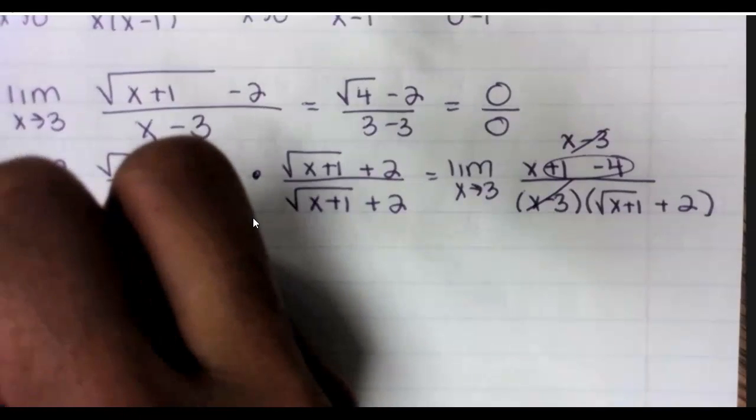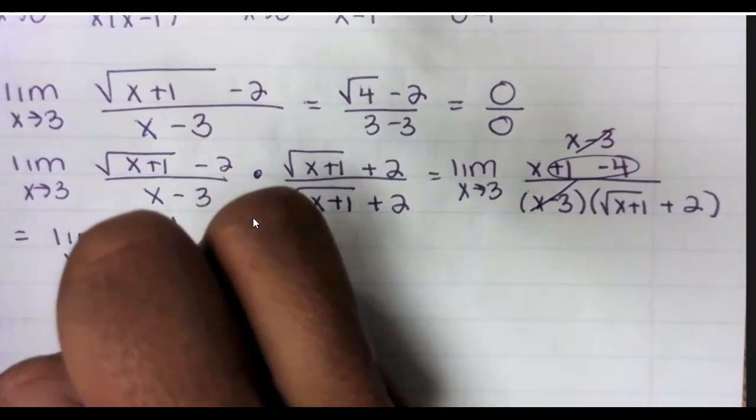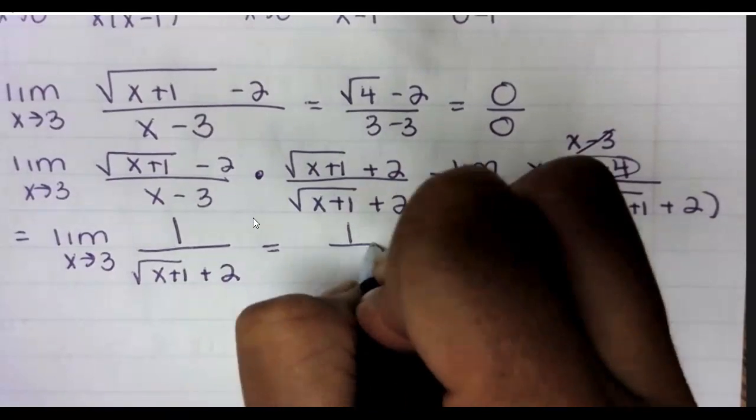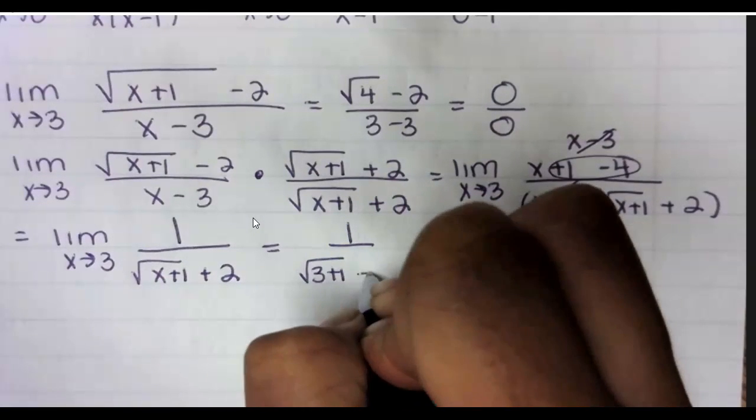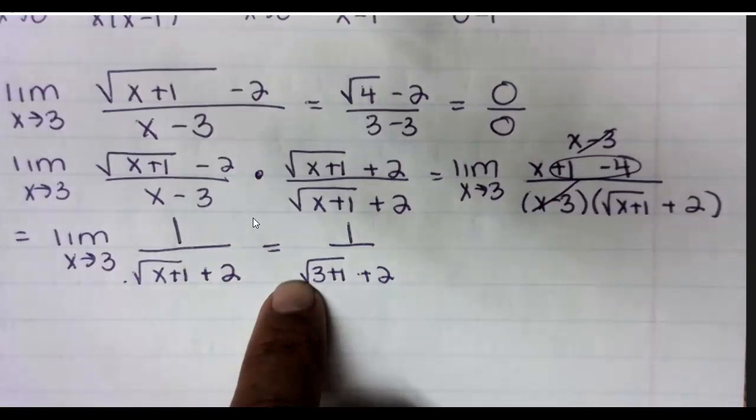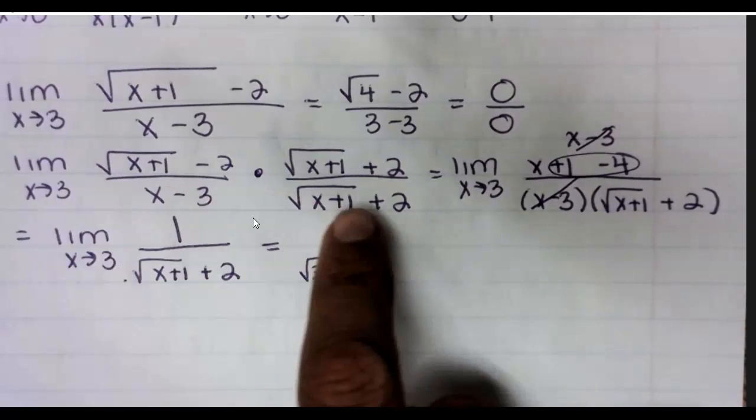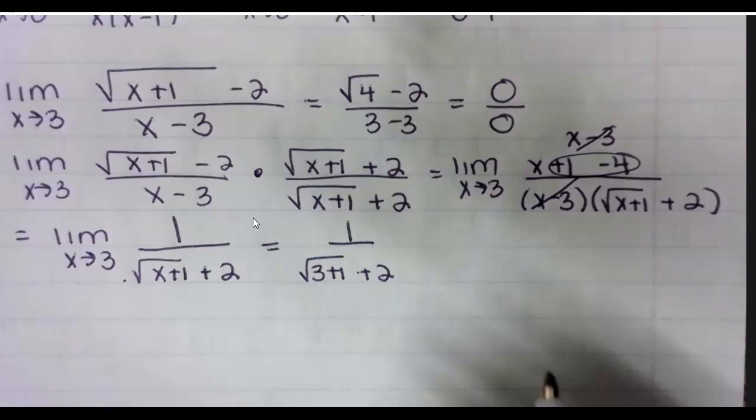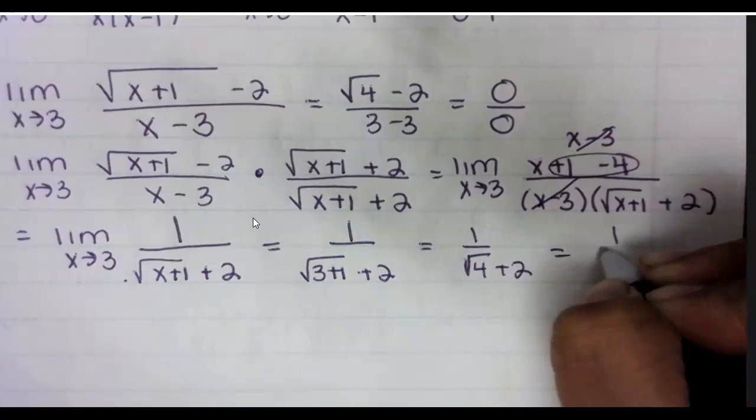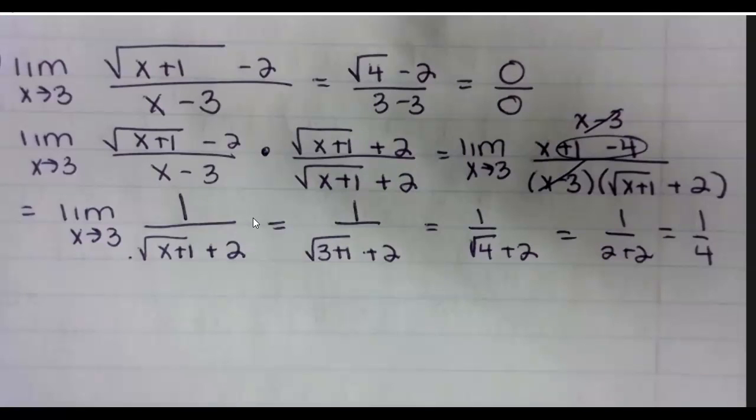All over x minus three times square root x plus one plus two. Notice how I keep them grouped in parentheses. I don't want to multiply them. The reason for that is because here plus one and minus four makes my numerator x minus three and that cancels nicely with that denominator. So this is equal to the limit as x approaches three of one over square root x plus one plus two. Now I plug in my number. When I plug in the number I no longer rate my limit.